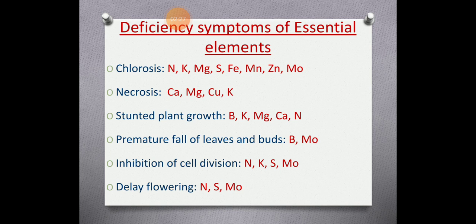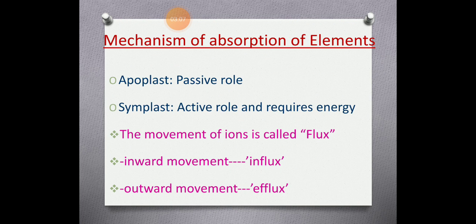Nitrogen, potash, sulfur, and molybdenum — if not available in proper quantity — cause inhibition during cell division. The internodal and nodal regions will not develop properly, and you will not get proper maturation of the plant. Nitrogen and sulfur deficiency also leads to delay in flowering, postponing the flowering of the plant. Especially in floriculture crops, these elements are required in proper quantity for flowers to develop in the proper season.